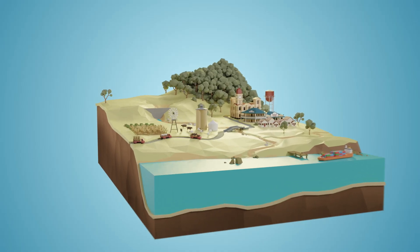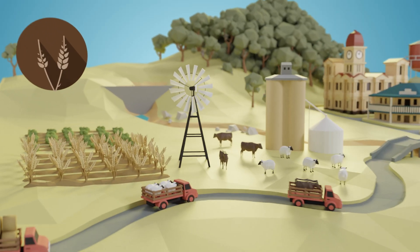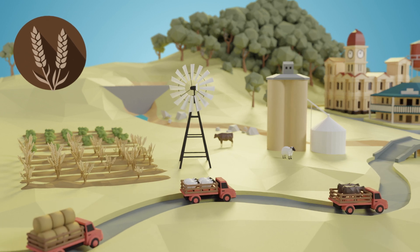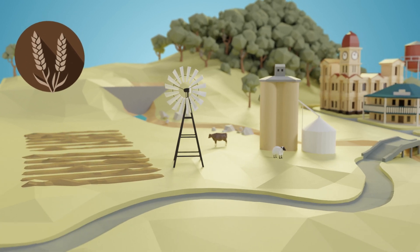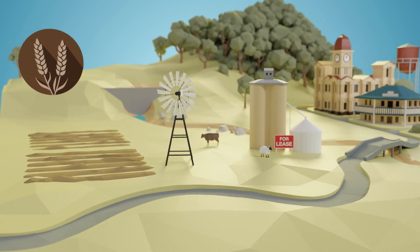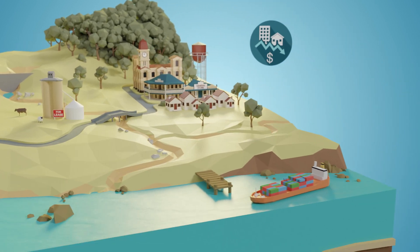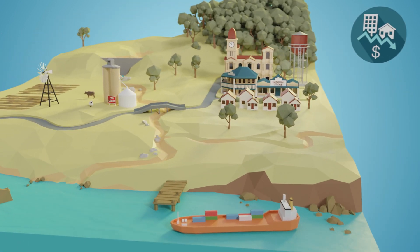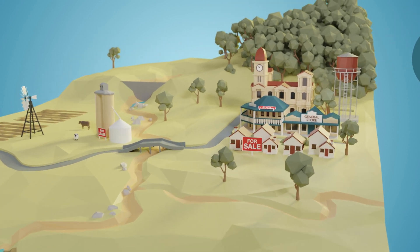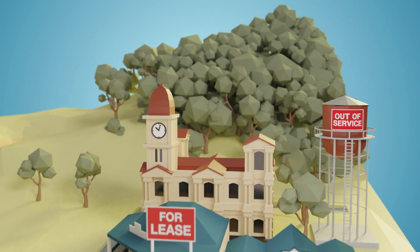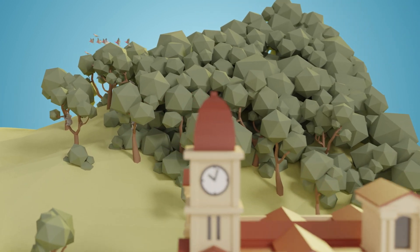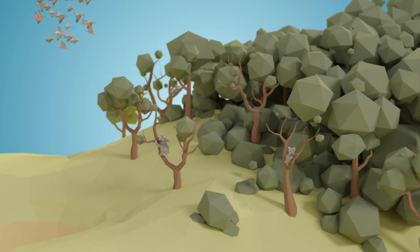This lack of water can go on to affect people and their livelihoods. Agricultural drought means reduced productivity, lost income and a strain on those communities. Socio-economic drought sees effects spreading through the wider community. In fact, our whole environment is vulnerable during drought.